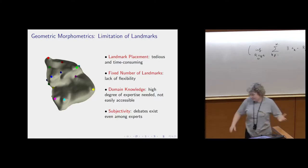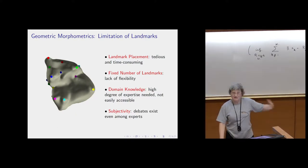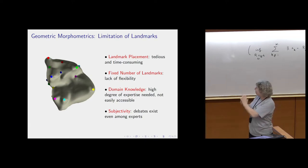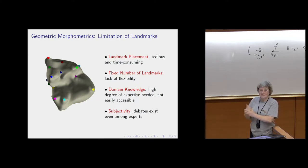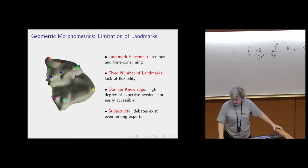The idea was: since we had these geometric methods — computational geometry — could we design a way to get distances that were as good as the procrustes distances for biological tasks?